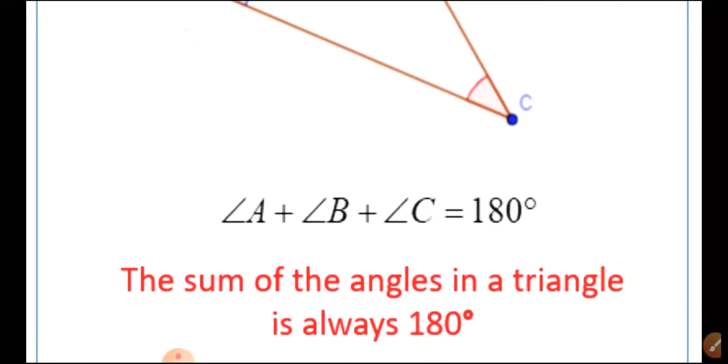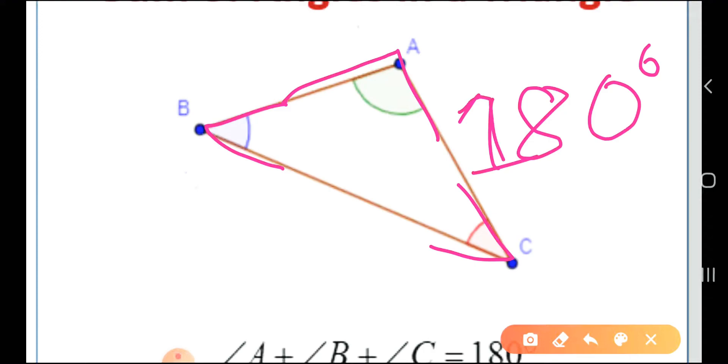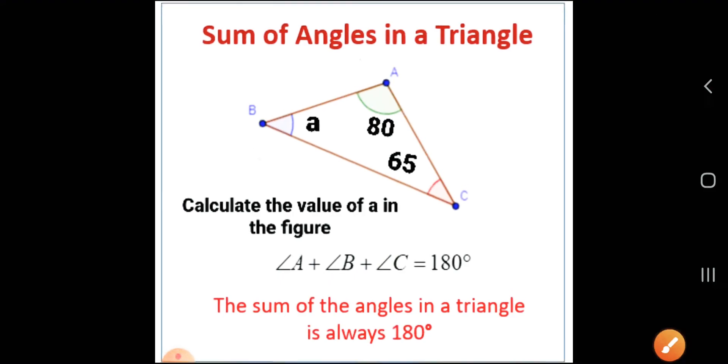The sum of the angles in a triangle is always 180 degrees. That means this angle, this angle, and this angle altogether equal 180 degrees. This is something you must remember. Here is another problem.